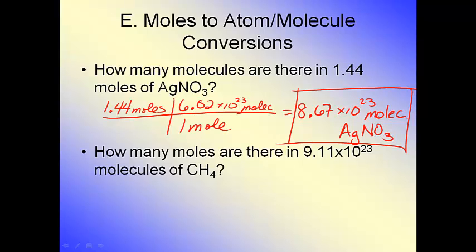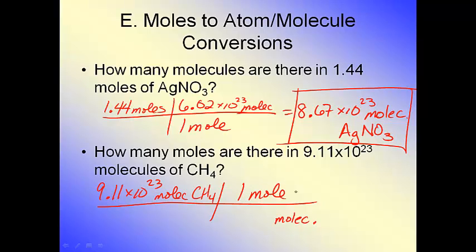It says, how many moles are there in 9.11 times 10 to the 23rd molecules of methane? So again, I write down my given. Now, because I started with molecules, molecules have to go on the bottom of my conversion. And one mole is going to go on the top. So this is where the 6.02 times 10 to the 23rd will come into play wherever the molecule is.